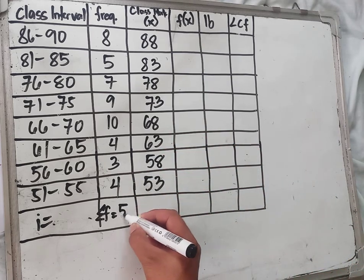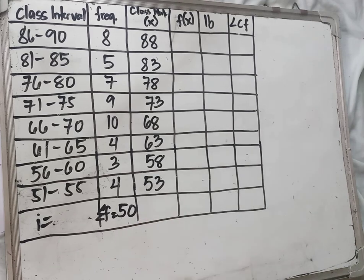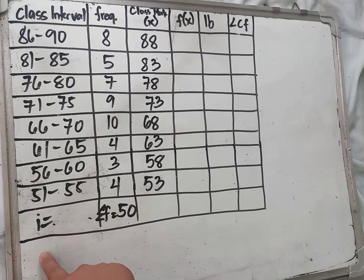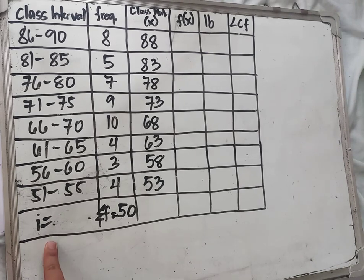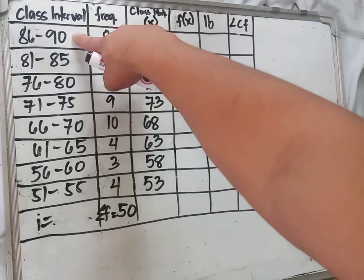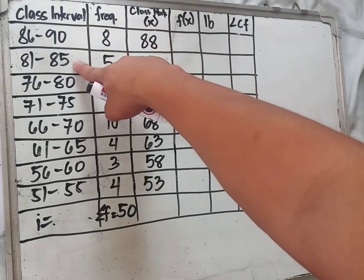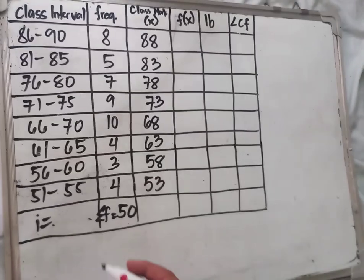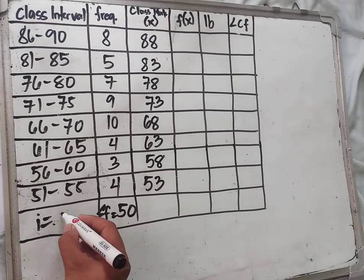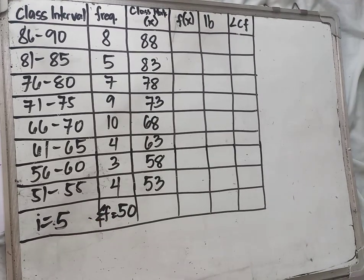The total frequency is 50. For the class interval, 90 minus 85 equals 5, and 86 to 90 is also 5, so the class interval i is 5.